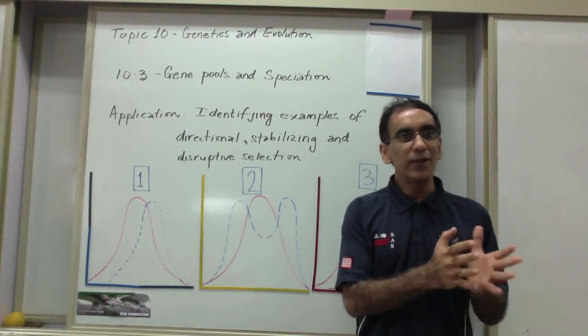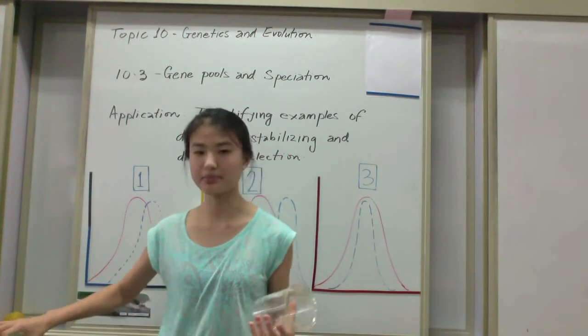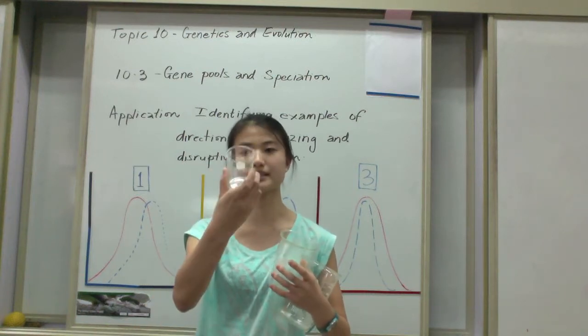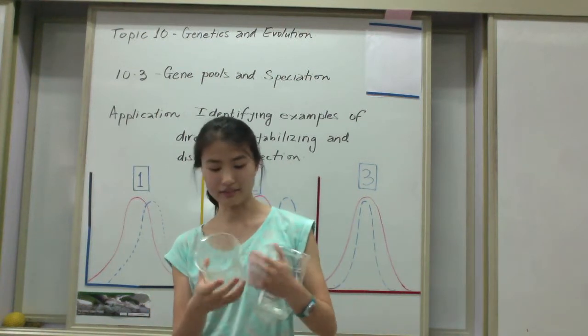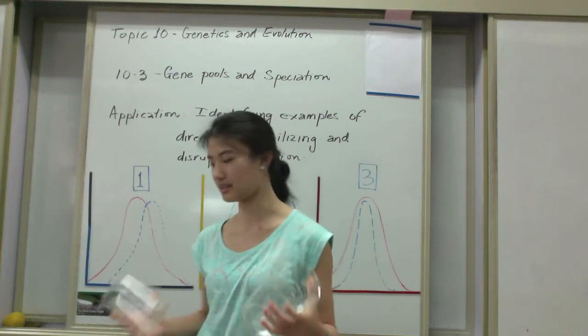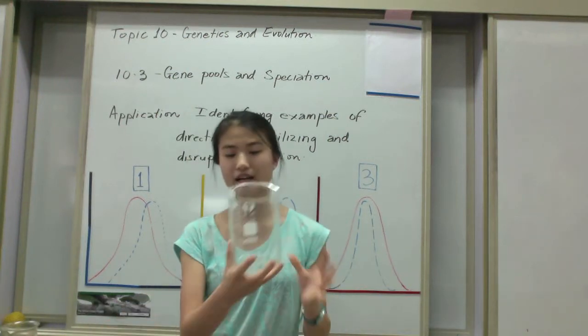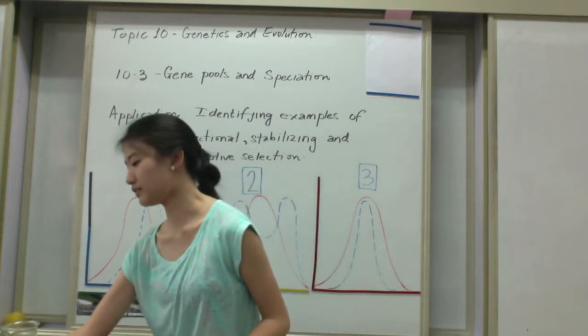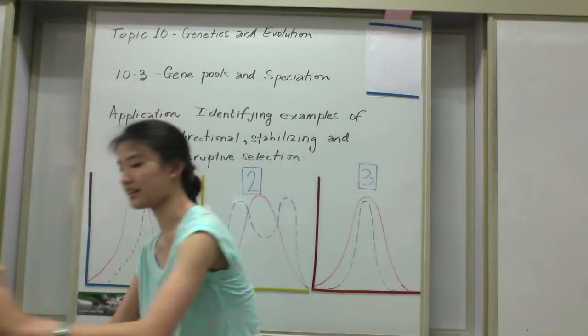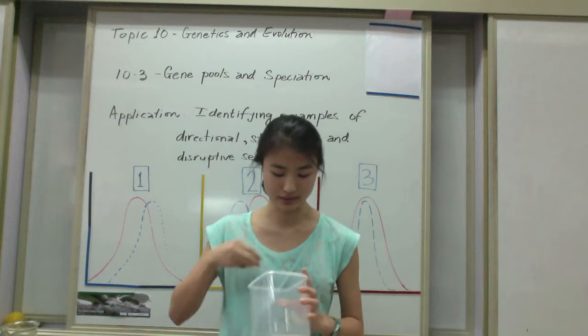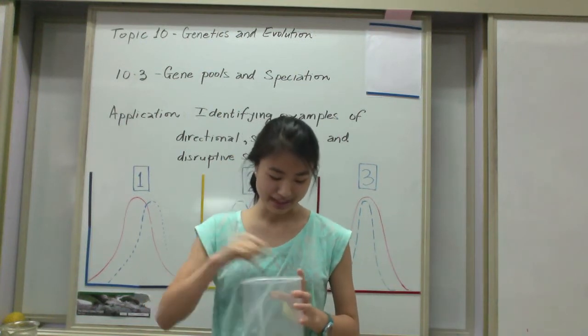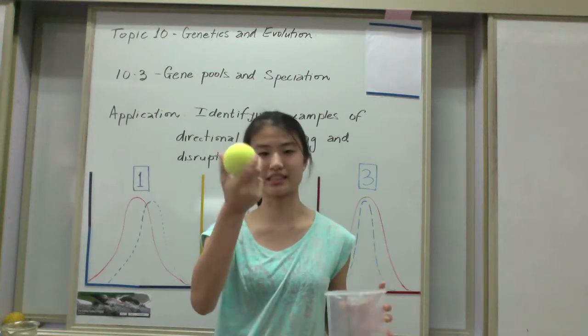I want to give you a couple minutes to think about it. Talk to somebody next to you, and if you want to come up with a partner to show how the model works, then you can come up as a team. We have three different types of beakers which represent three different beak sizes, and we have two different types of fruits that vary in sizes.